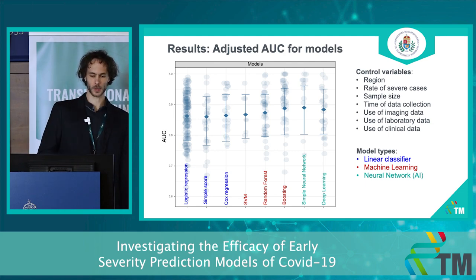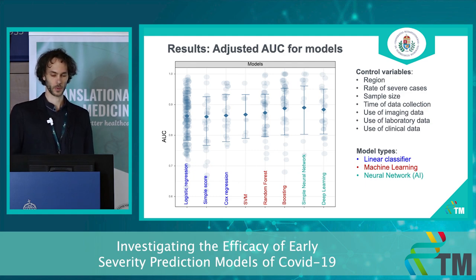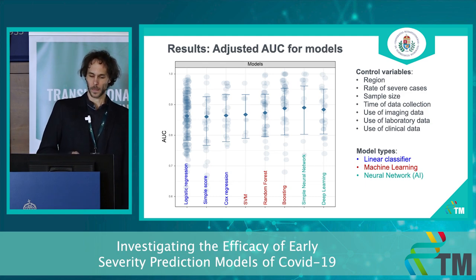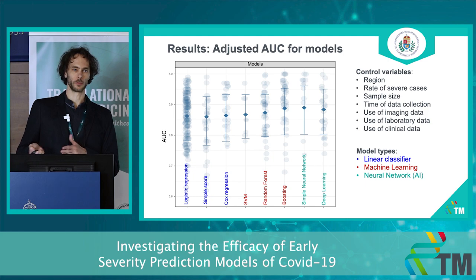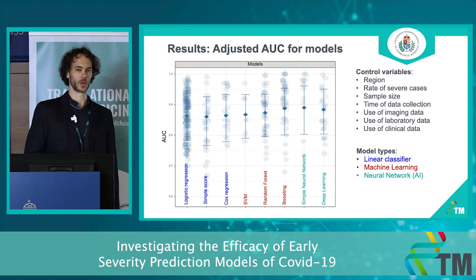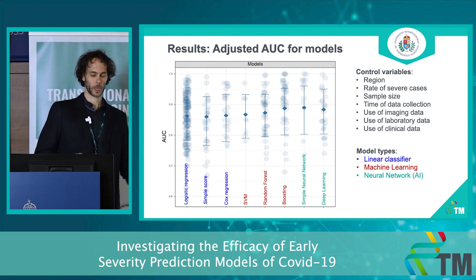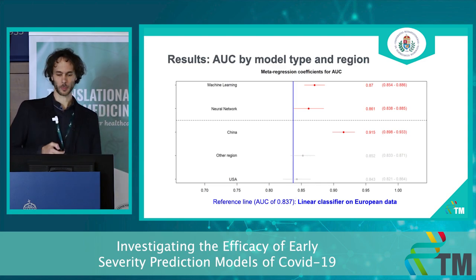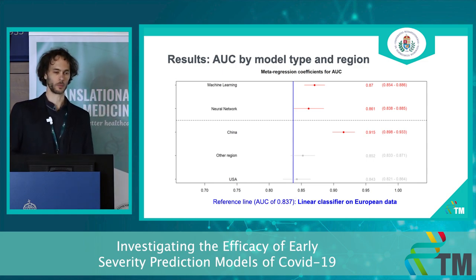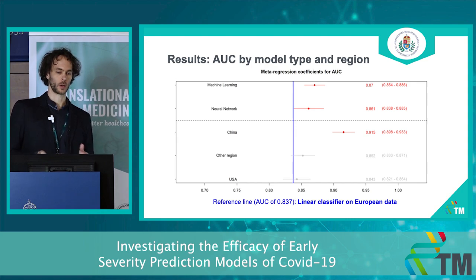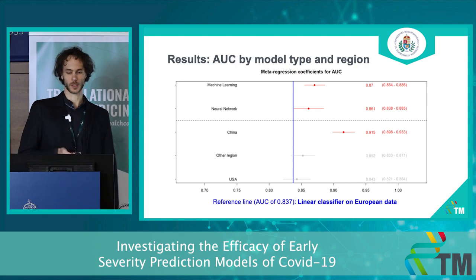The primary result is that there is a difference between the different tool types for severity prediction — you can see the adjusted area under curve values here. There were many possible confounding factors when assessing model performance, and we used a meta-forest machine learning model specifically designed for such problems to tackle the many possible confounders. From the meta-regression with selected control variables, we see that compared to simpler linear classifier models, machine learning models and neural networks are both better — but between those two, there isn't much of a difference.